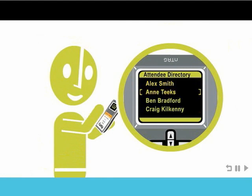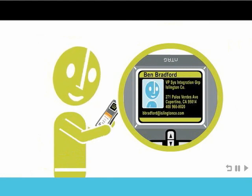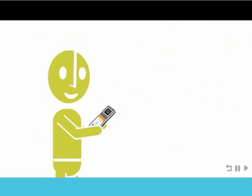Harry can check the attendee directory and set up alerts for when targeted conference goers, in this case Ben, are in the vicinity.